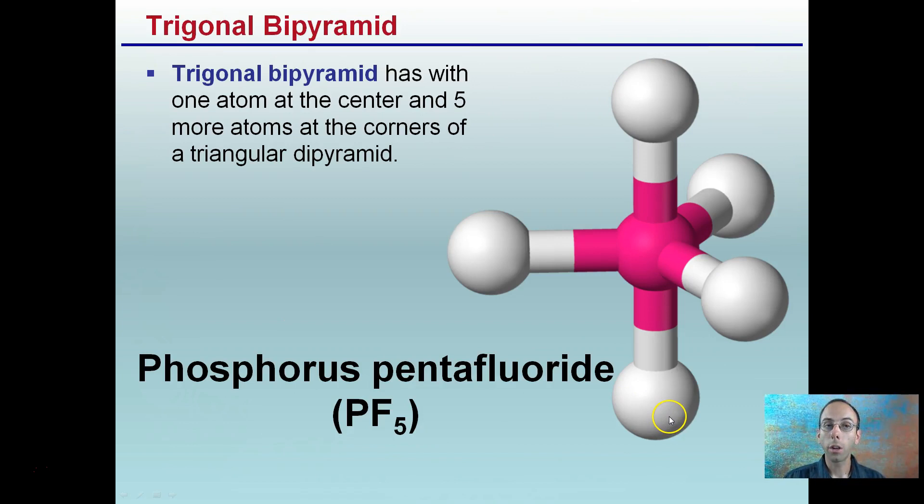Moving on, trigonal bipyramid. Trigonal bipyramid has one atom at the center and five more atoms at the corners of the trigonal bipyramid. So this one gets a little confusing. Trigonal, if we remember trigonal planar, here's our three in the same plane. Bipyramid, this forms a pyramid.